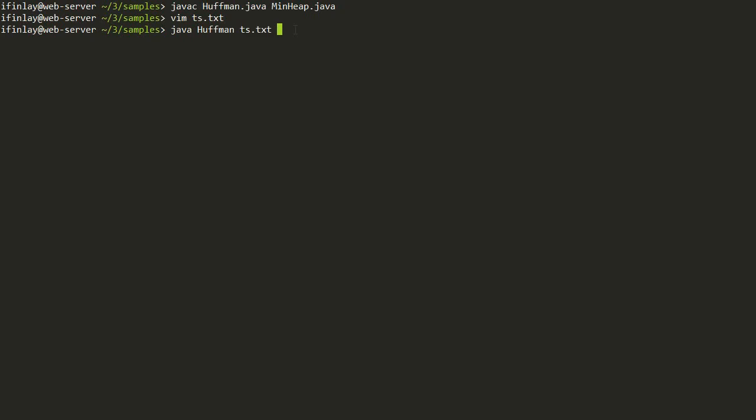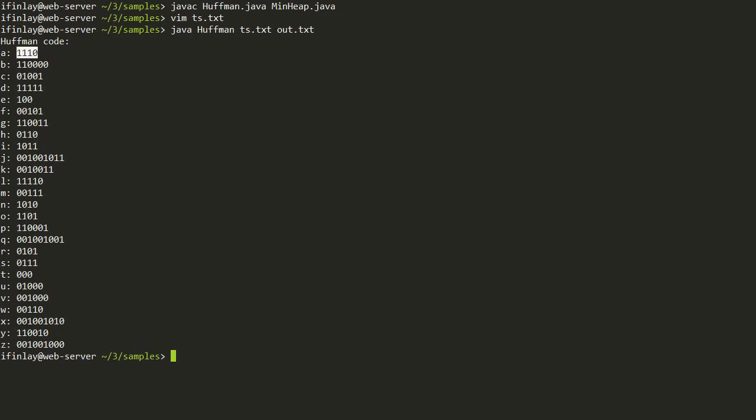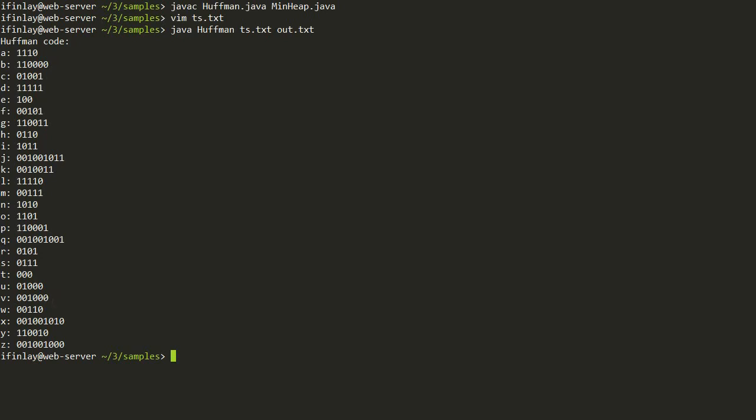So let's run it on this input file. I'm going to do java Huffman and then the input is TS.text, and let's put the output as out.text. So the first thing it does is it prints out the tree that gets used for doing the compression. You can see that the most common letters like E and T and A and R and S have smaller code words, whereas, as you might expect, the letters that are less commonly used like J and Q and X and Z have longer ones.